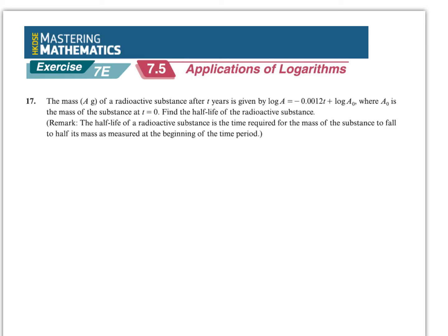大家好,我是Mr. Mengso,今天會為大家講的就是Mastering Mathematics, Exercise 7E, Question 17. The mass a-gram of a radioactive system after t-years is given by log a equals minus 0.0012t plus